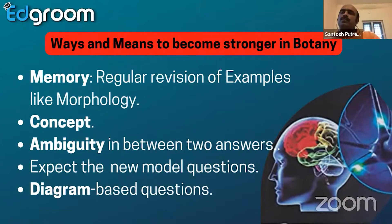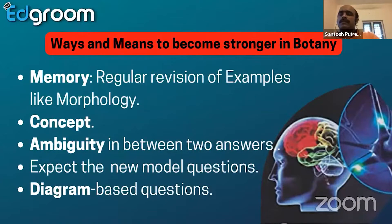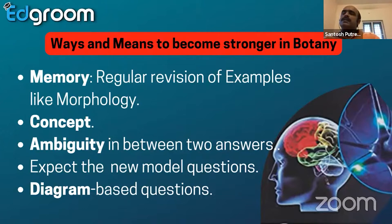The fourth point is what I presume to expect this year: new model questions. How can there be a new model question? For example, take the concept of ascent of sap theory — how water moves from the root system to the shoot system. The entire synopsis of the theory can be presented as Roman numerals 1 to 5, and you may be asked to arrange them in the correct sequence. Similarly, the steps in replication can be given as different points and you may be asked to place them in the correct sequence. That is the new model type of question.